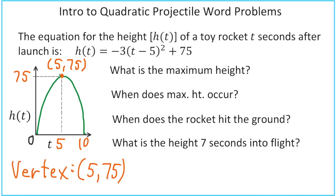So what is our maximum height? Our maximum height is 75. I guess I realize now that I didn't give you units on this. Let's assume that it's feet.